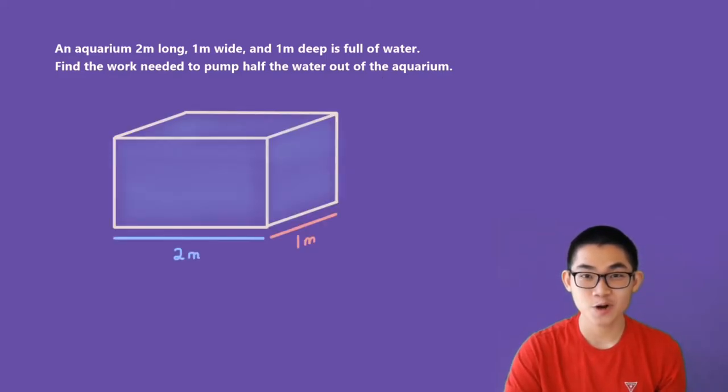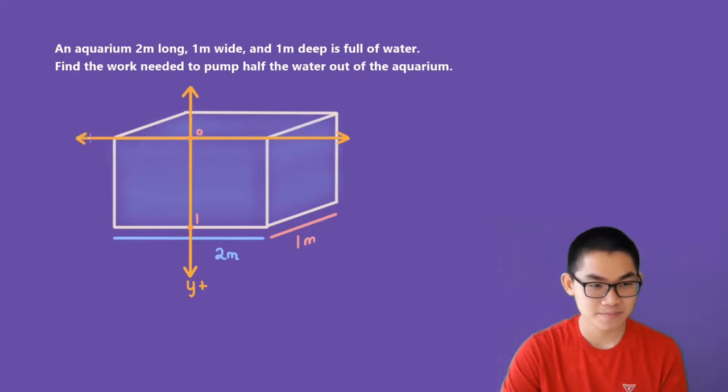The first step is to draw our aquarium. As you can see, I've drawn our tank. It is 2 meters long and 1 meter wide. The second step is to place the x and y axis like this. Place the x axis at the top of the box and have a y axis pointing down. The y direction is positive in this case. At this point it is 0 and this point is 1 because the tank is 1 meter deep. So from here to here is 0 to 1.